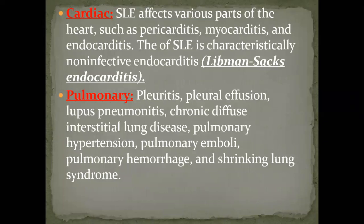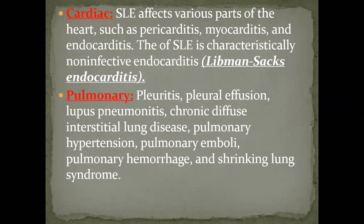Cardiac affection: recalling from pathology, there is something called Libman-Sacks endocarditis, a non-infective endocarditis caused by lupus autoimmune reaction. Like in case two, lupus can cause pericarditis, pericardial effusion, and myocarditis. Pulmonary affection is also very common: pleuritis, pleural effusion, lupus nephritis, interstitial lung disease, pulmonary hypertension, pulmonary embolization, alveolar hemorrhage, and shrinking lung syndrome, where fibrosis causes decreased lung capacity.